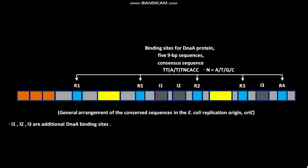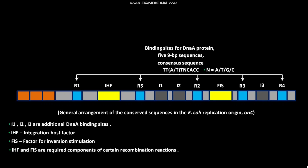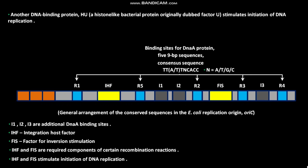The conserved sequences in the E. coli replication origin OriC also have an IHF binding site and a FIS binding site. IHF stands for Integration Host Factor. FIS stands for Factor for Inversion Stimulation. IHF and FIS are required components of certain recombination reactions, and they stimulate initiation of DNA replication. Another DNA binding protein, HU, a histone-like bacterial protein originally dubbed Factor U, also stimulates initiation of DNA replication. The protein HU has no specific binding site.